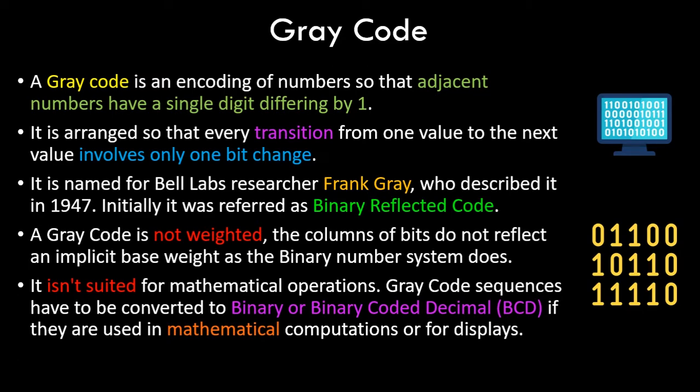Gray code is an encoding of numbers such that adjacent numbers have a single digit difference. Basically, gray code is a binary number itself — the radix of gray code is two, so it comprises only zeros and ones — but it is encoded so that every transition from one value to the next involves only one bit change. It is named for Bell Labs researcher Frank Gray, who described it in 1947, and it was initially referred to as binary reflected code.